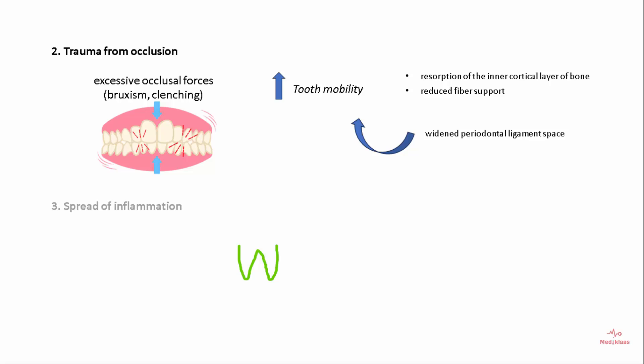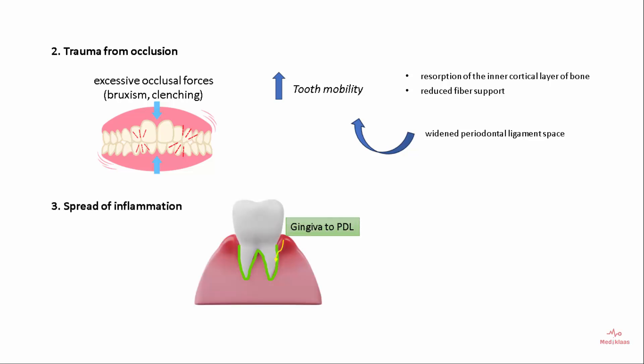Spread of inflammation can also cause tooth mobility. Inflammation can spread from the gingiva to the periodontal ligament, or from the periapical area to the periodontal ligament in cases of periapical abscesses, leading to increased tooth mobility.